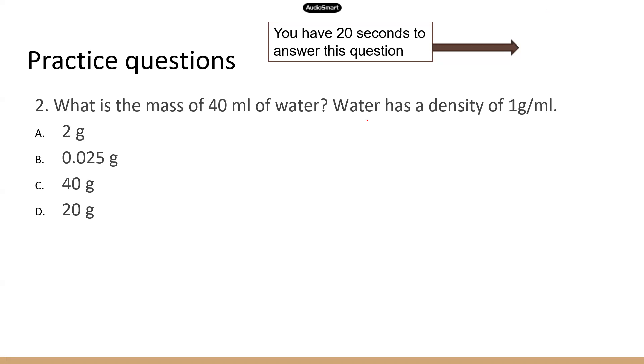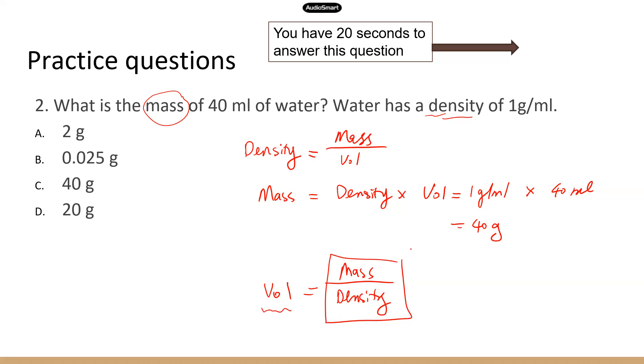So this time, instead of asking you to calculate density, it asks you to calculate the mass of this much water. So that's also not bad. With this formula, density equals mass divided by volume, you know that mass equals density multiplied by volume. So the mass of 40 mils of water is going to be 1 gram per mil multiplied by 40 mils, and then the answer is 40 grams. And similarly, you can calculate volume as well. Volume is going to be mass divided by density. So if the question asks you to calculate a volume, then you can use this equation to calculate that. So the correct answer is C. All right, next question.